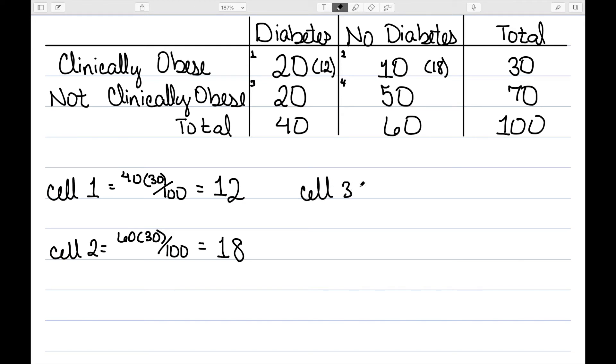For cell three, the row total is 70 and the column total is 40. So we have the 70 and the 40 divided by my 100 total gives me 28. So I'll put a 28 here. And then finally cell four, we have 70 and 60 as my two totals, divided by 100 overall total gives me 42. So I'll put 42 in parentheses here.